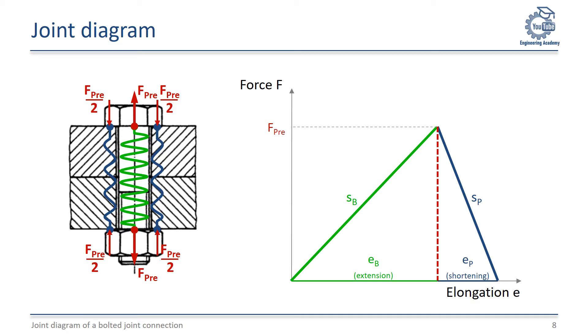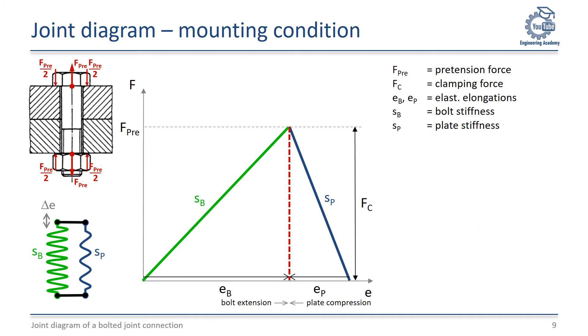It is characterized by the two hook lines with the stiffness SB for the bolt and SP for the plates. They touch themselves at the top where the absolute value of the force is equal to the pretension force. After mounting the bolt joint connection, the clamping force FC is equal to the pretension force in all gorgings.